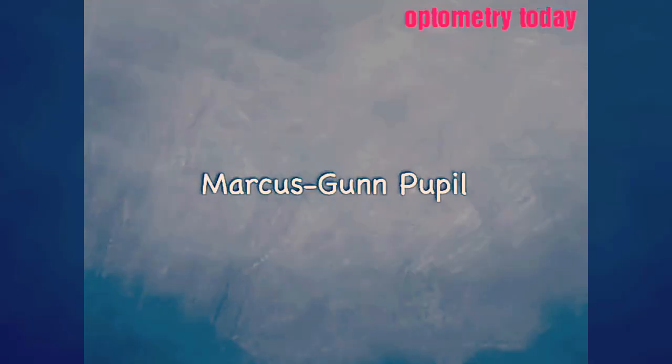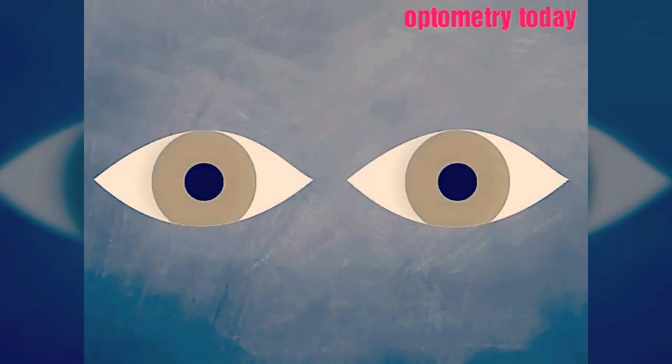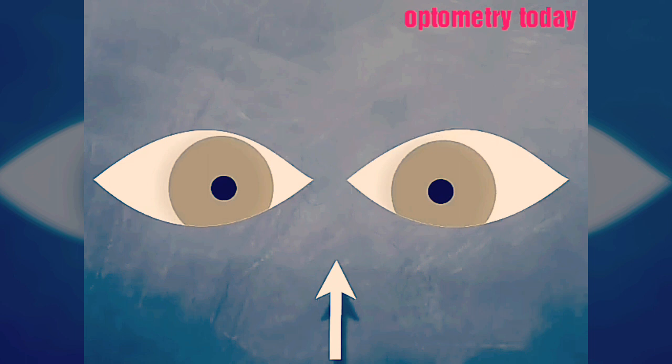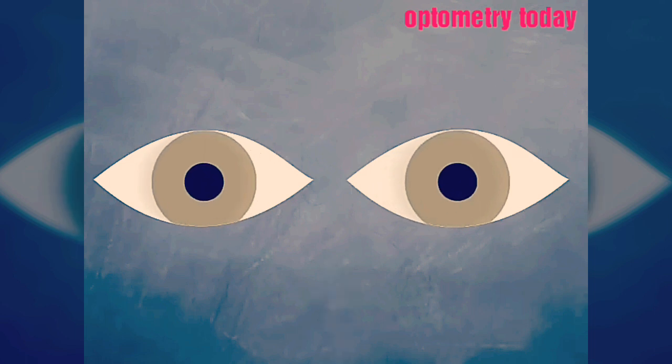First, we will compare its clinical appearance with that of normal pupils, and also that of a complete afferent pupil defect. To avoid pupil constriction whilst accommodating, ask the patient to fix on a distant object throughout your examination.